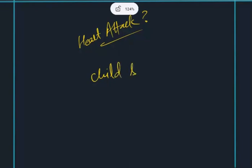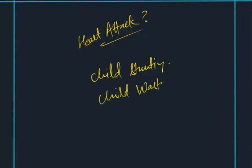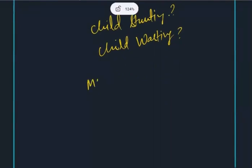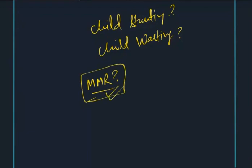What do you understand by child stunting and child wasting? Child stunting — the child stops growing; I mean, the height of the child. What do you understand by MMR? Maternal mortality rate — when the mother dies while giving birth.